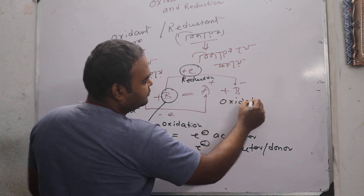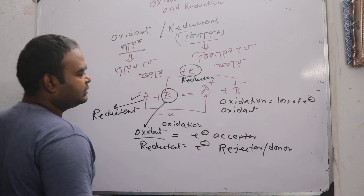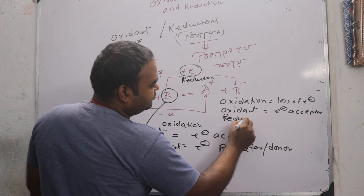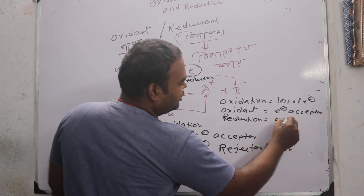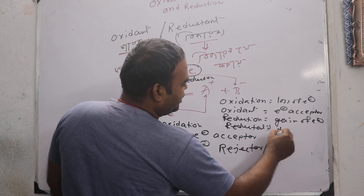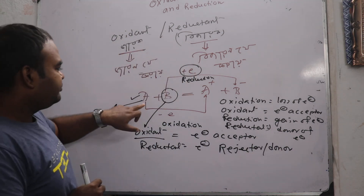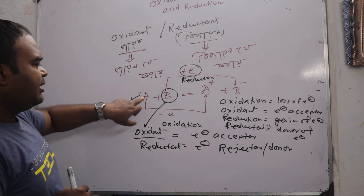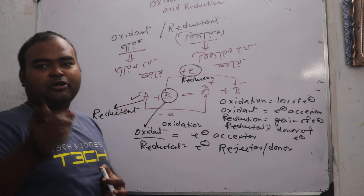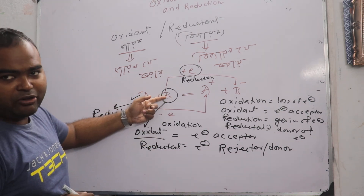Oxidation — loss of electron. But the oxidant is the electron acceptor. Reduction — gain of electron. The reductant is the donor of electron. The oxidant means the electron acceptor: the oxidant reduces itself and oxidizes the other species.